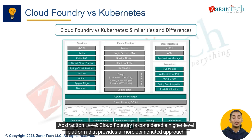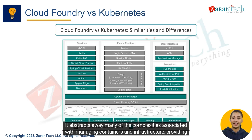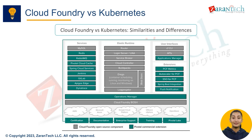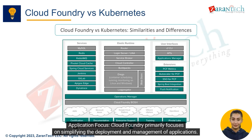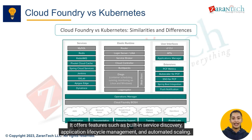In terms of differences, abstraction level is a key distinguisher: Cloud Foundry is a higher-level platform that provides a more opinionated approach to application deployment, abstracting away complexities of managing containers and infrastructure for a simpler developer experience. Kubernetes is a lower-level platform offering more flexibility and control over container orchestration. Cloud Foundry primarily focuses on simplifying application deployment with built-in service discovery, application lifecycle management, and automated scaling.